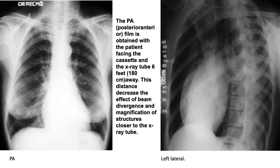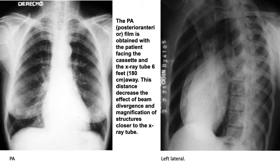Let's start with the chest X-ray. In chest X-ray we have different views: posterior-anterior, lateral view, and oblique views. For the posterior-anterior view, it is very important — especially when talking about the heart — that the X-ray be done in posterior-anterior position. The patient faces the cassette and the X-ray tube is 6 feet (180 cm) away from the cassette. This distance decreases the effect of beam divergence and magnification of structures closer to the X-ray tube. For that reason, when you want to measure the heart or any structure, you have to take the X-ray in posterior-anterior position.